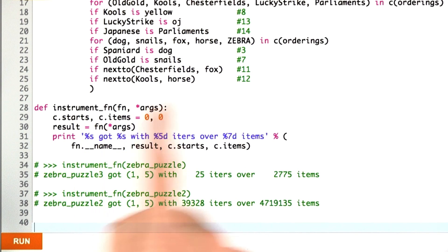We initialize those counts to 0, we call the function, and then we say, what do we get back? With the zebra puzzle, it only took us 25 iterations over 2,700 items.